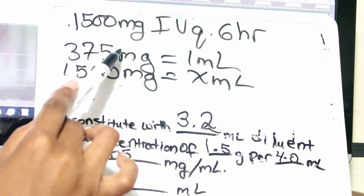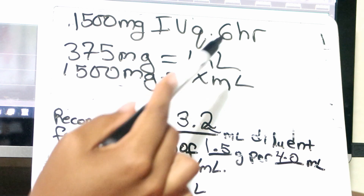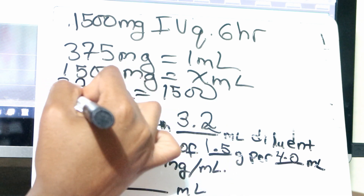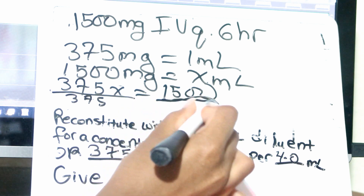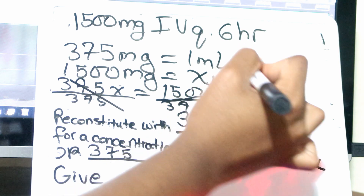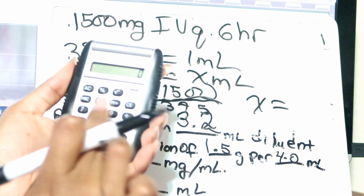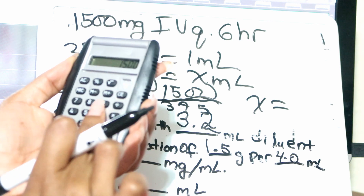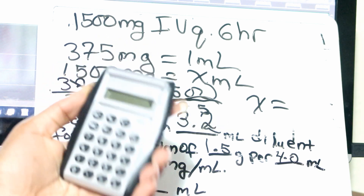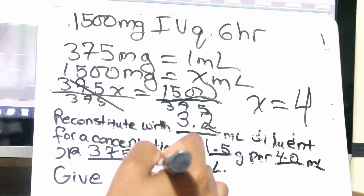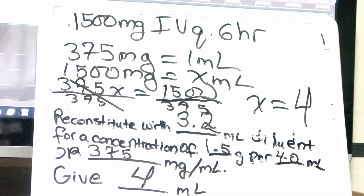We're going to divide by 375, so x equals 1,500 divided by 375. Using the calculator: that gives you 4, so x equals 4 mL. That is how much you are going to give. Hope you guys enjoyed this question. If you have any questions, leave them in the comments down below, email me, or Instagram me at KimmyDTV or KimmyDTV at gmail.com.